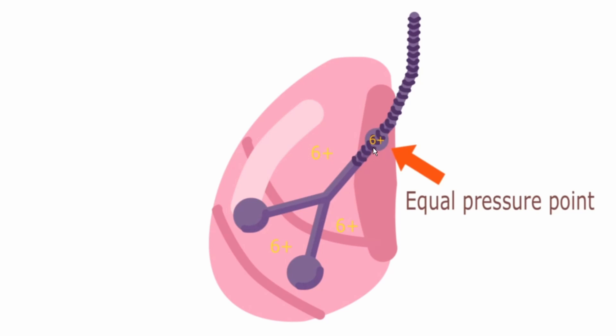And this will be important because when we're going to look at what happens when the equal pressure point is reached too low, we'll see what happens then.